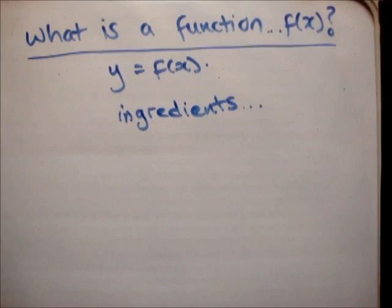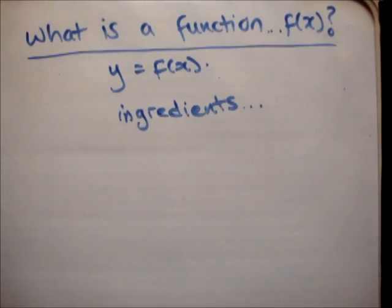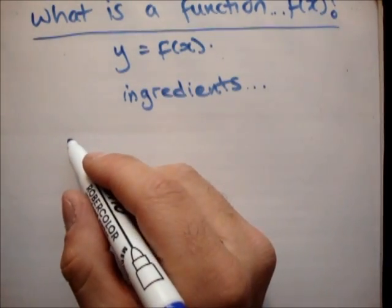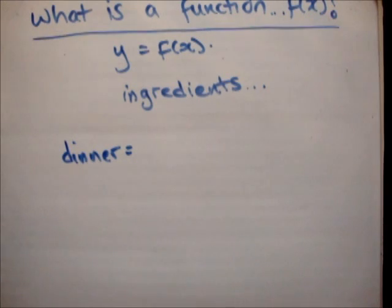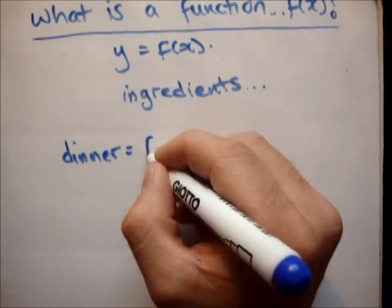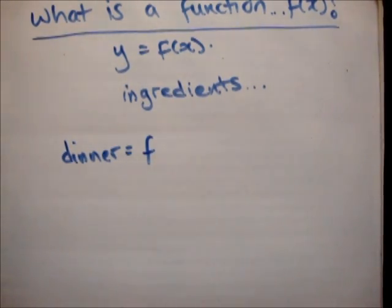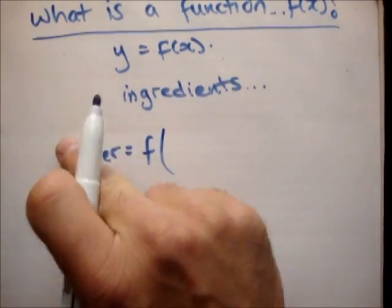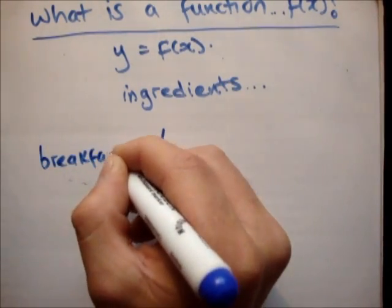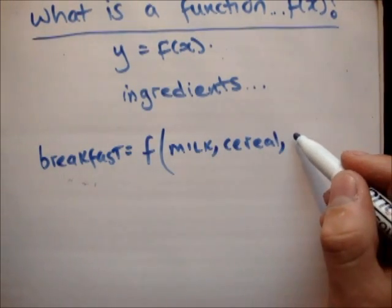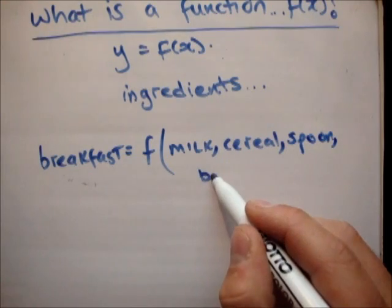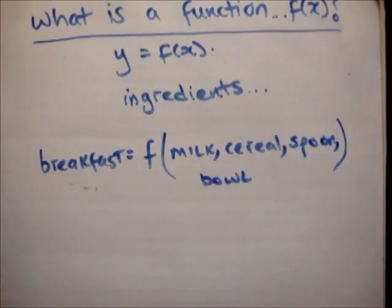All it is, is the ingredients. So first of all, what is a function? A function describes the ingredients you need to do something. Say for example I wanted to make a dinner — if you go to a cookbook you will be given the ingredients. So let's say your dinner is a function — f means function. Breakfast is probably an easy one: breakfast is a function of milk, cereal, and spoon and bowl.